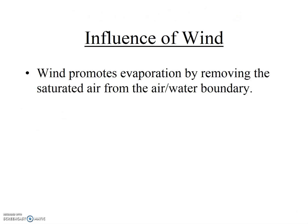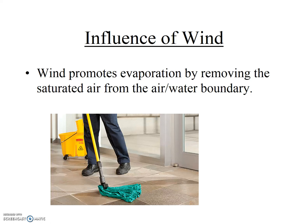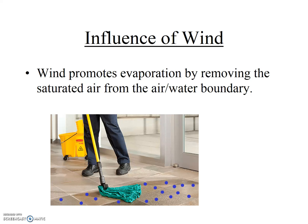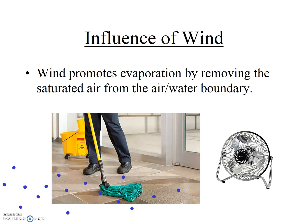The third factor that influences evaporation rate is wind. When water evaporates from a surface, the air immediately above it becomes saturated. If that saturated air stays there, no further evaporation will occur. But if the saturated air is blown away by wind, more evaporation can take place. You're already familiar with this concept — if you mop your floor and then put a fan on, your floor will dry faster. The fan simply blows away all of the moist air from above the floor, so that the air above the floor is now dry again and more water can evaporate.